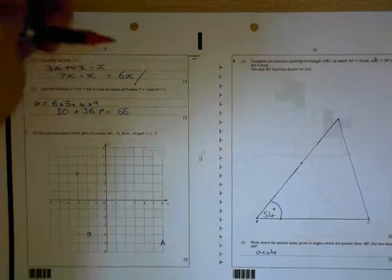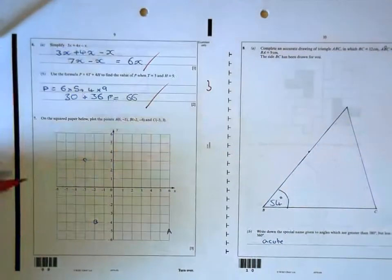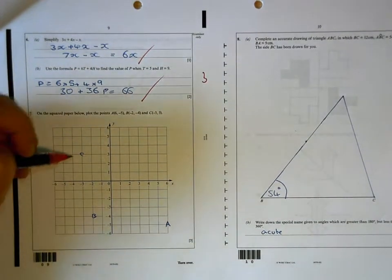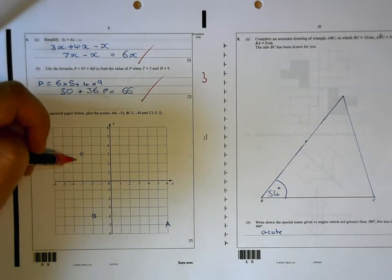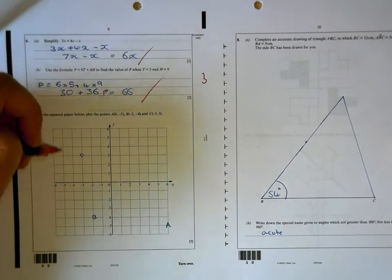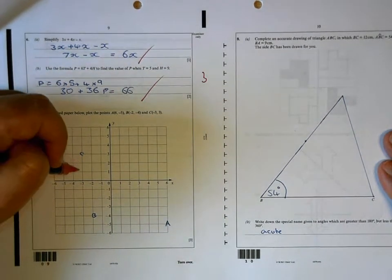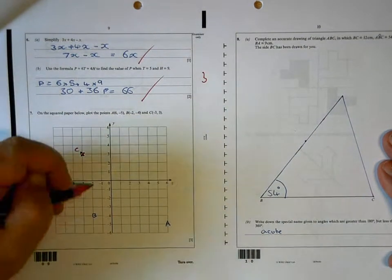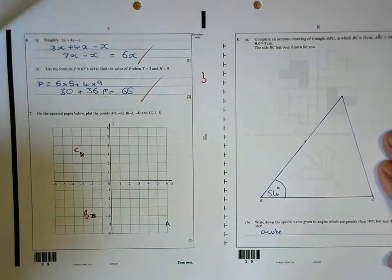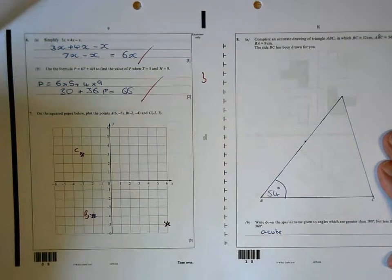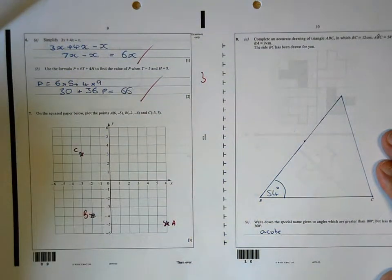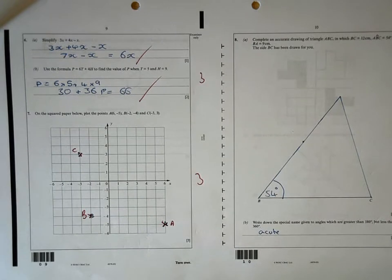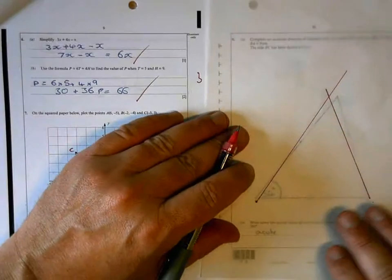6x is correct. 66 is correct. Now when you're plotting points, don't just put the letters where they are. Mark the points clearly with a cross and write the letters next to them. So what you should be doing is putting a cross there and writing C next to it, putting a cross there and writing B next to it, and similarly across on the grid, and then labeling the point that you're marking. I'll give you the marks this time, but I would penalize that normally. Your triangle is slightly out.